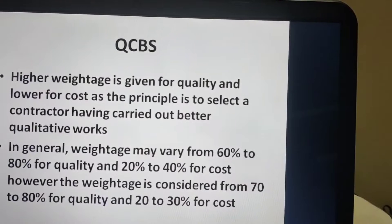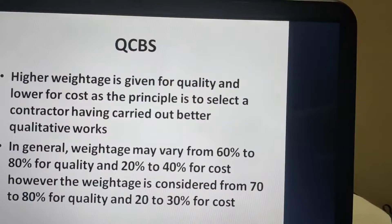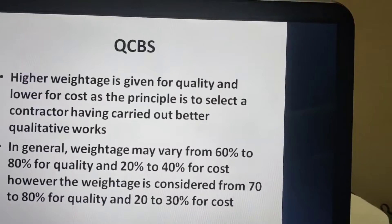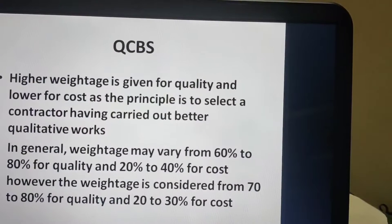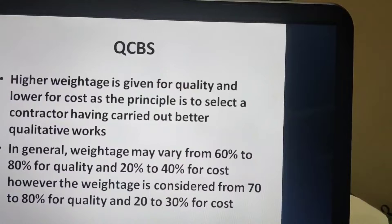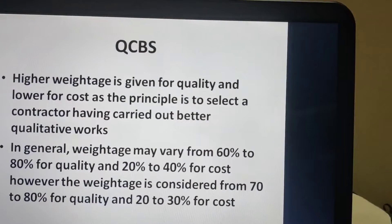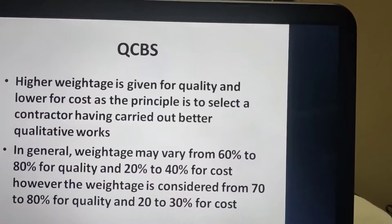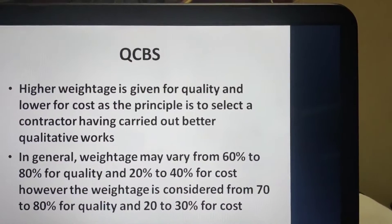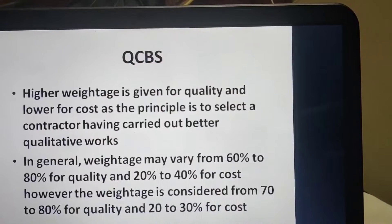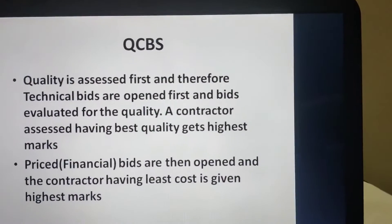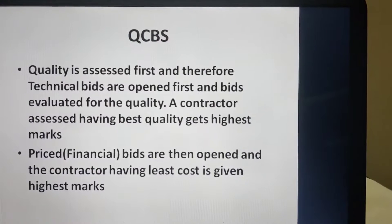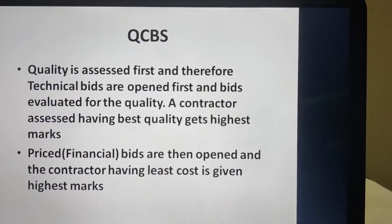In general, weightage may vary from 60 to 80 percent for quality and 20 to 40 percent for cost. However, in our country India, the weightage is generally considered from 70 to 80 percent for quality and 20 to 30 percent for cost. Quality is assessed first and thereafter technical bids are opened and evaluated for quality.